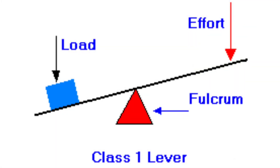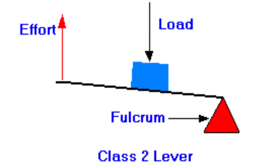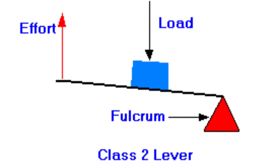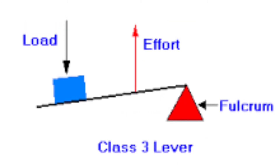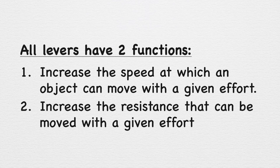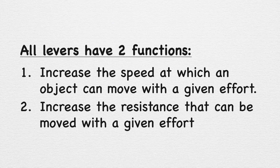There are three types of levers. The first class lever is where the pivot is between the force and the load. The second class lever is where the load is between the pivot and the force. A third class lever is where the force is between the pivot and the load. All levers have two functions: one, to increase the speed at which an object can move with a given force; and two, to increase the resistance that can be moved with a given force.